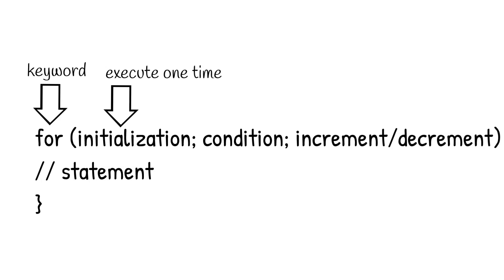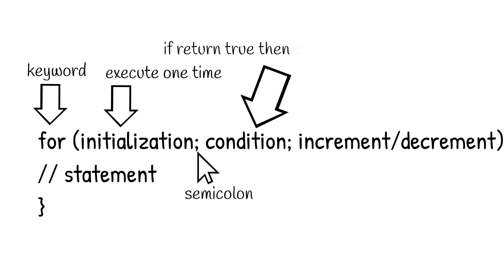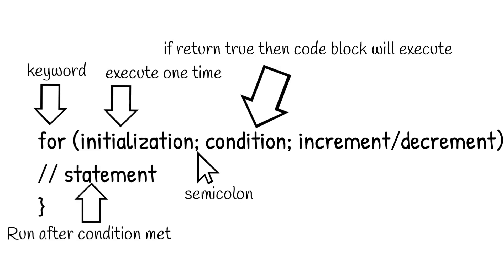You have to put a semicolon after each statement. The second statement is your condition, where you check whether that value satisfies the condition or not. If this condition is true, then your code block will be executed.